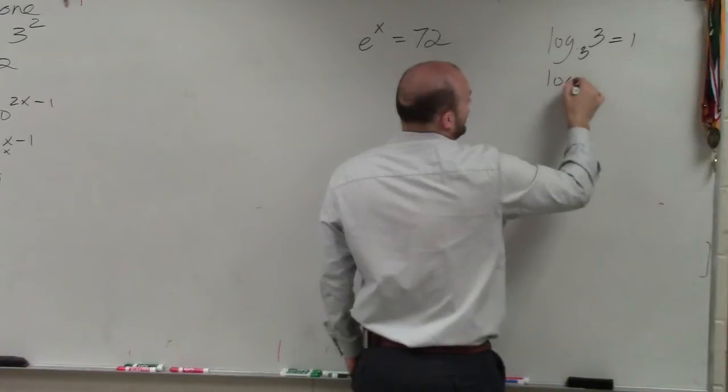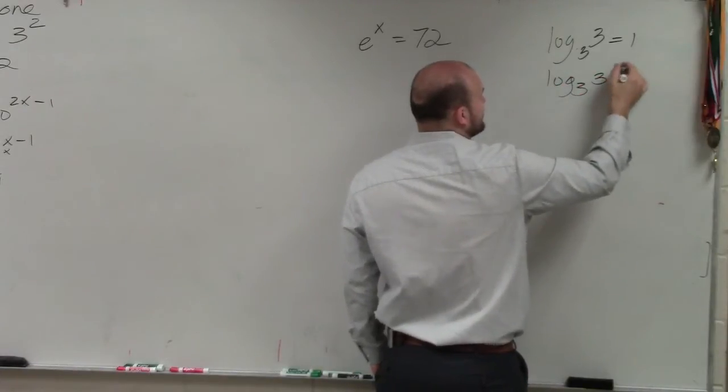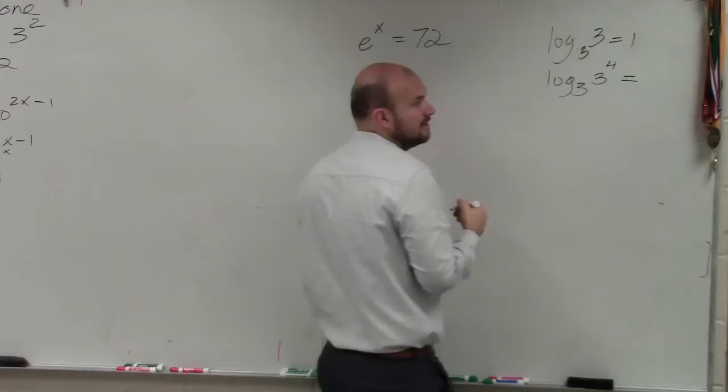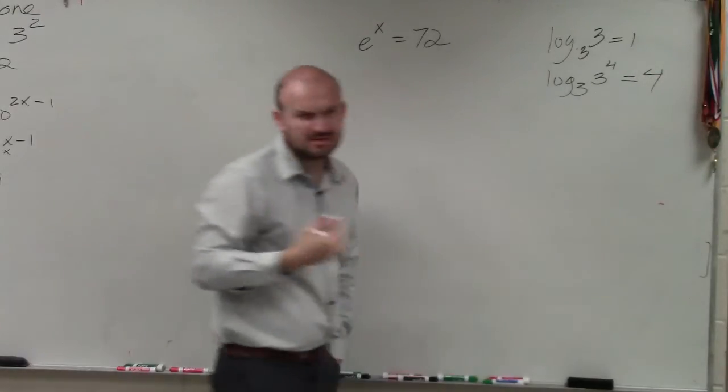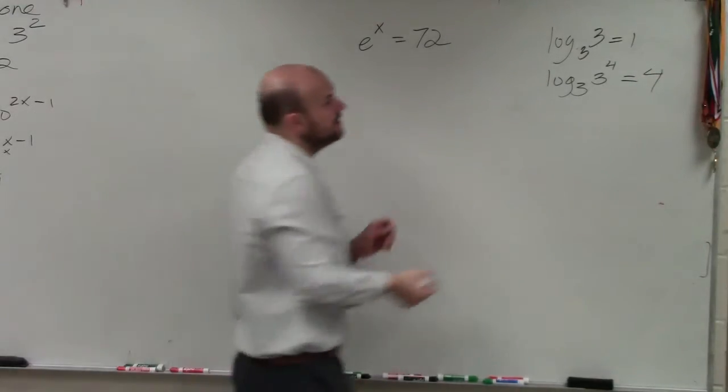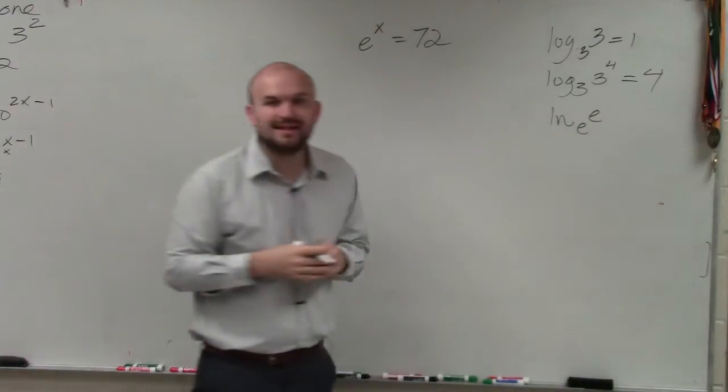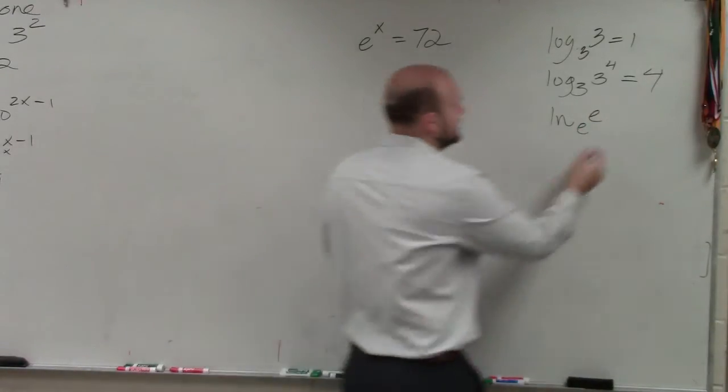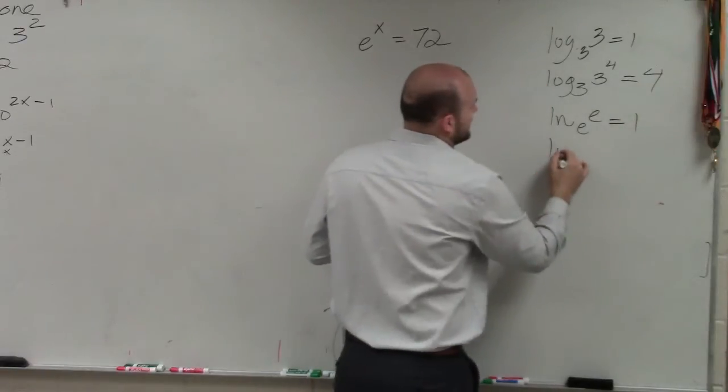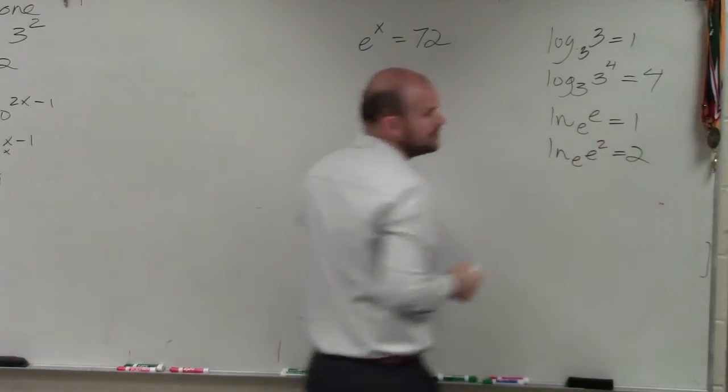If I did log base 3 of 3 to the fourth, that answer is equal to 4. Those are some of our rules of logarithms we dealt with. Now, remember, this is all the same thing when you have ln of base e raised to the e. And then ln of base e to the e squared is just going to equal 2.